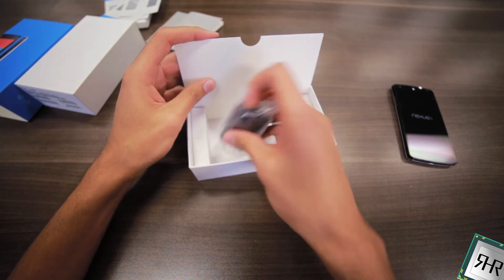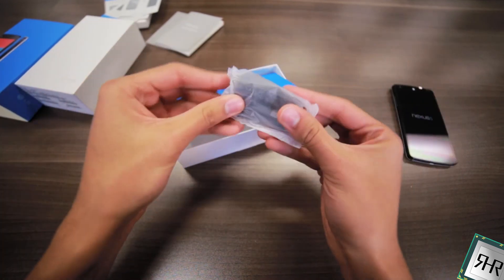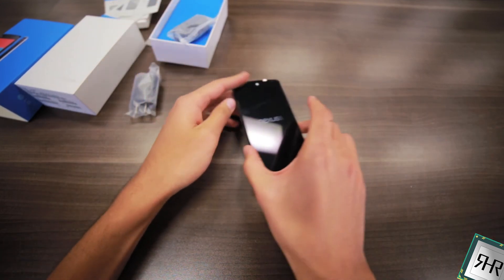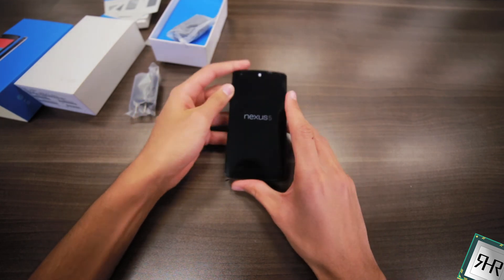And at the end we've got your typical AC adapter and your micro USB. So yeah, that's basically it. This is the unboxing of the Nexus 5 from Real Hardware Reviews and peace out.